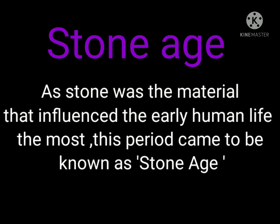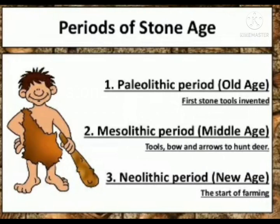The period of the Stone Age is divided into three: Paleolithic age, or old stone age; Mesolithic age, or middle stone age.